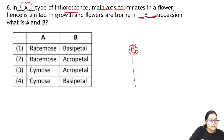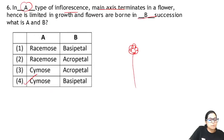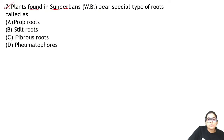In cymose type of inflorescence, the main axis terminates in a flower. This growth is limited. The main axis will be a flower. The flowers will be in basipetal succession. So this answer is D. Plants found in Sundarbans, West Bengal — that is the next question.